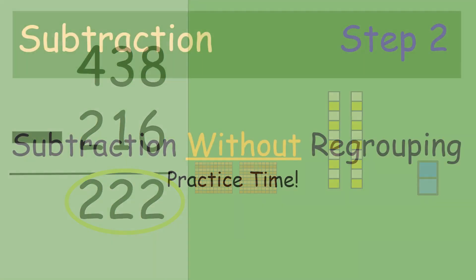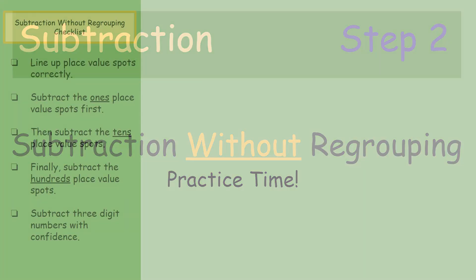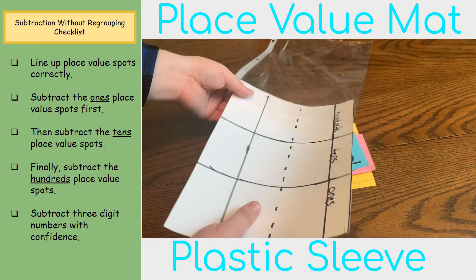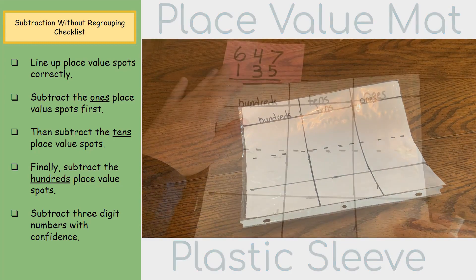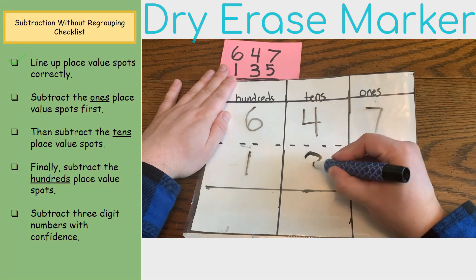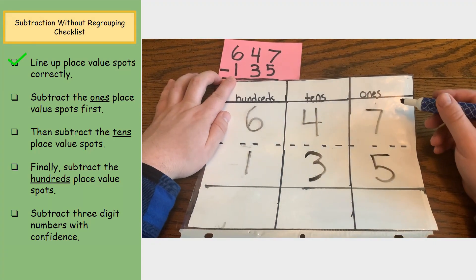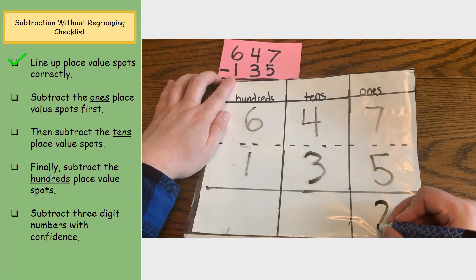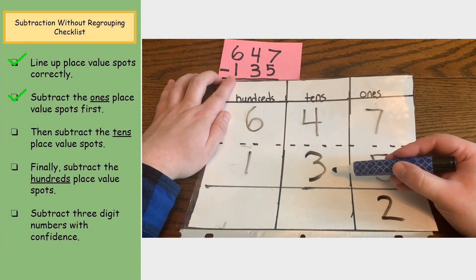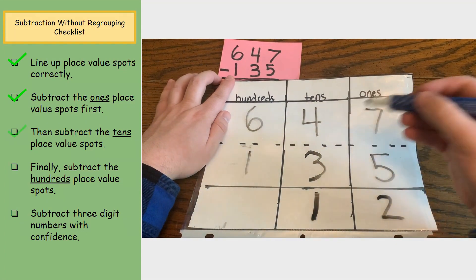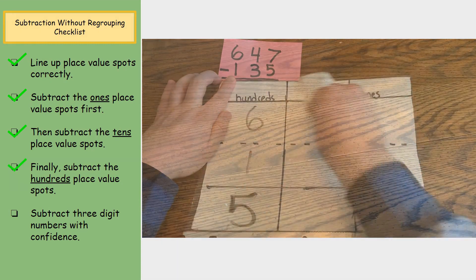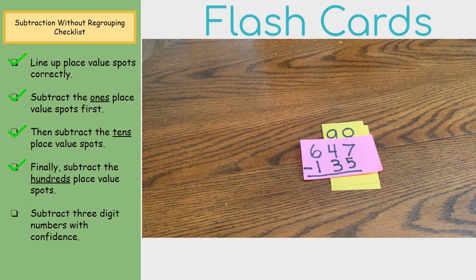Remember to practice every day. Here's a checklist you can use to help you: first, line up place value spots correctly; subtract the ones place value spot first; then subtract the tens place value spot; finally, subtract the hundreds place value spot. Subtract three-digit numbers with confidence!